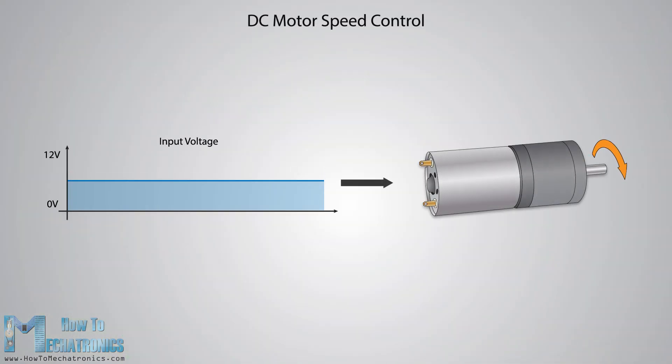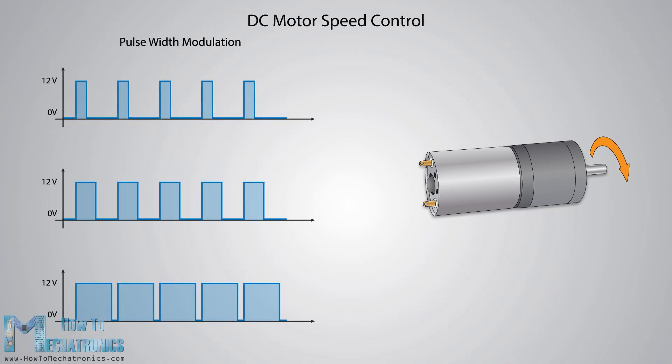We can control the speed of a DC motor by controlling the input voltage. For that purpose we can use PWM or Pulse Width Modulation, a method through which we can generate variable voltage by turning on and off the power going to the electronic device at a fast rate.